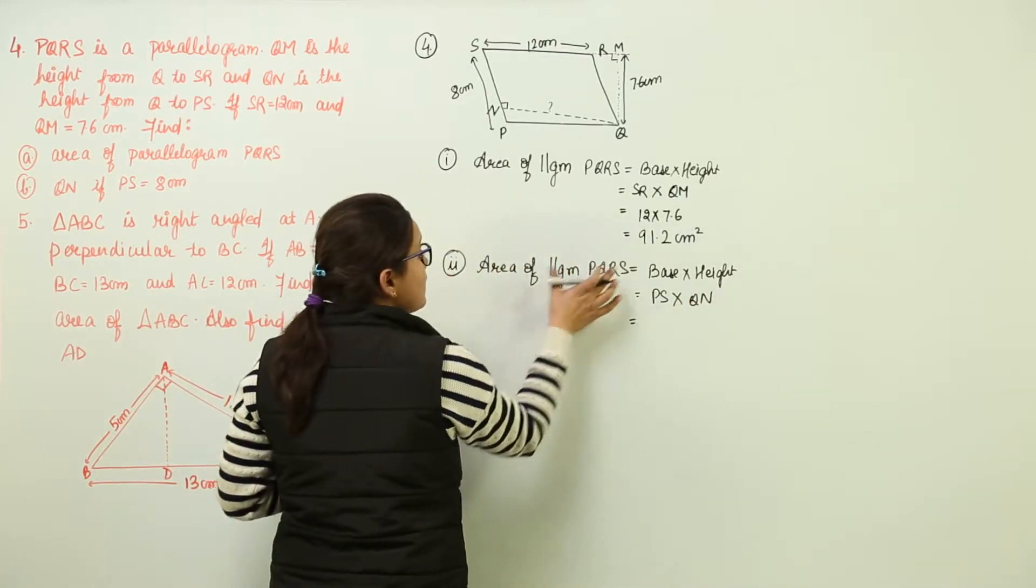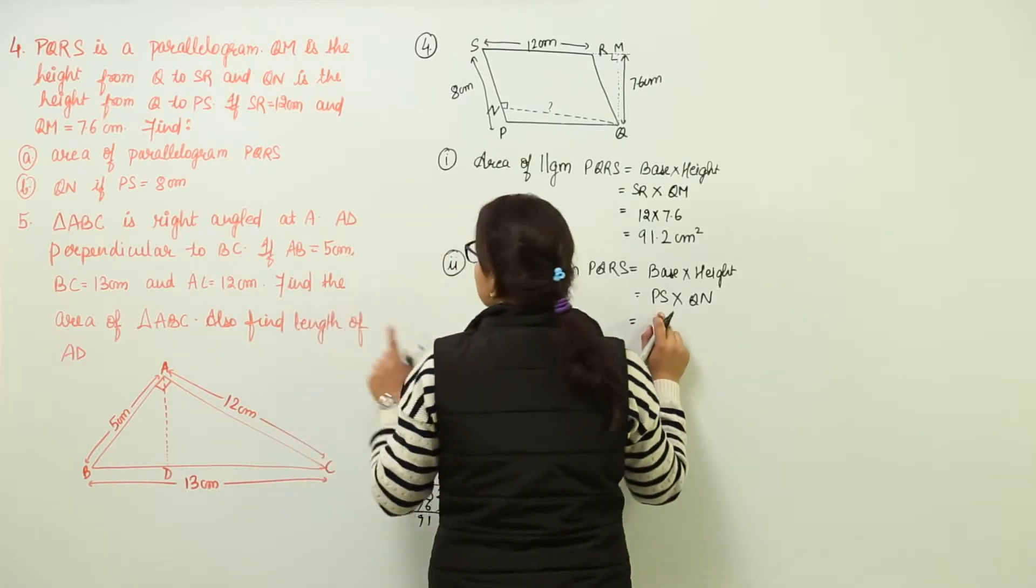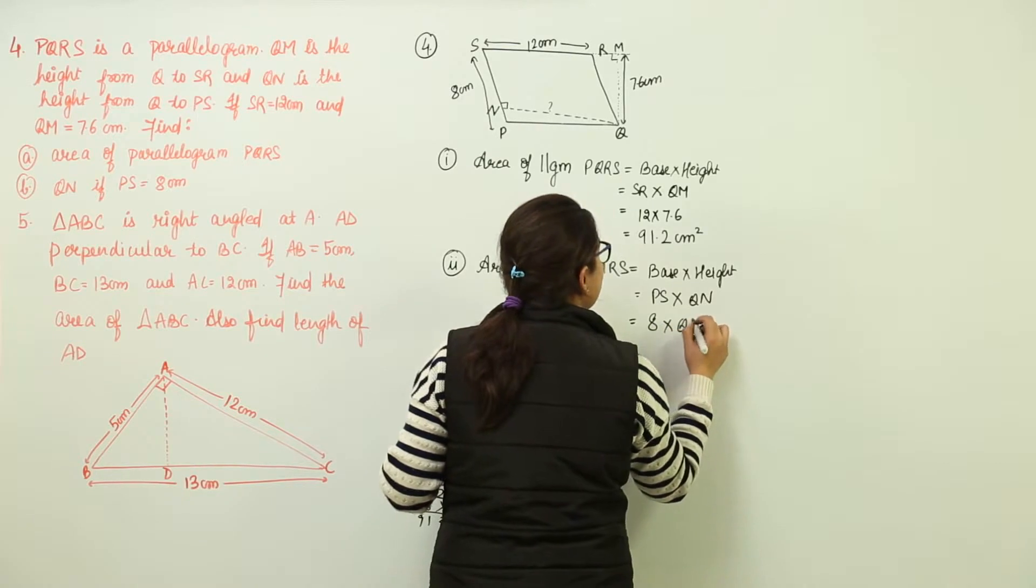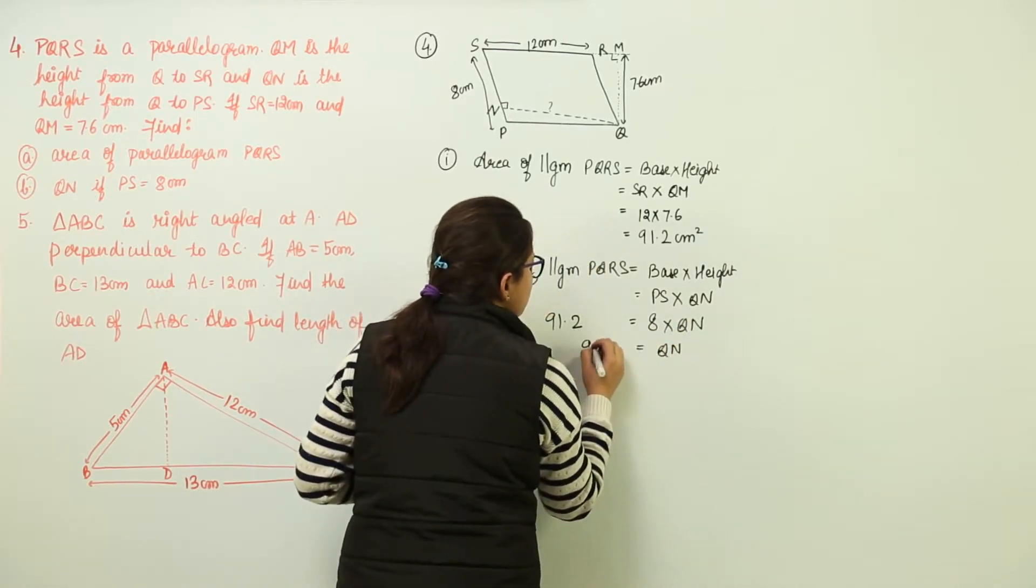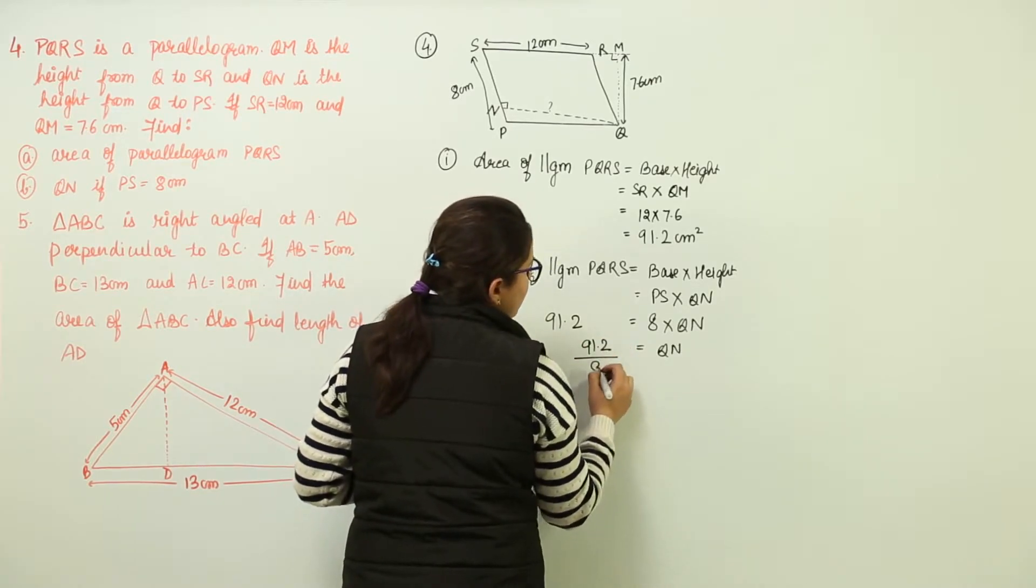So you will get the area that has been calculated as 91.2. PS has been given as 8 centimeters and we have to find out QN. So QN is going to be equal to 91.2 over 8.